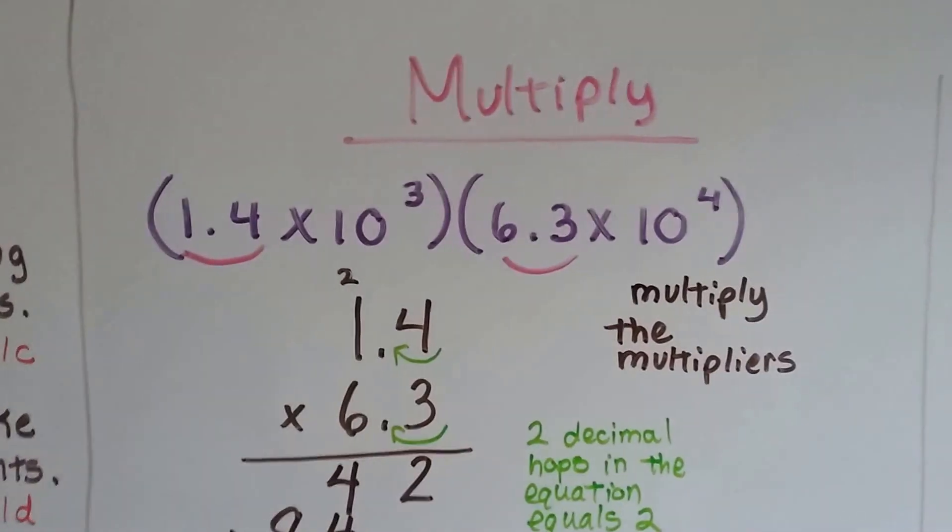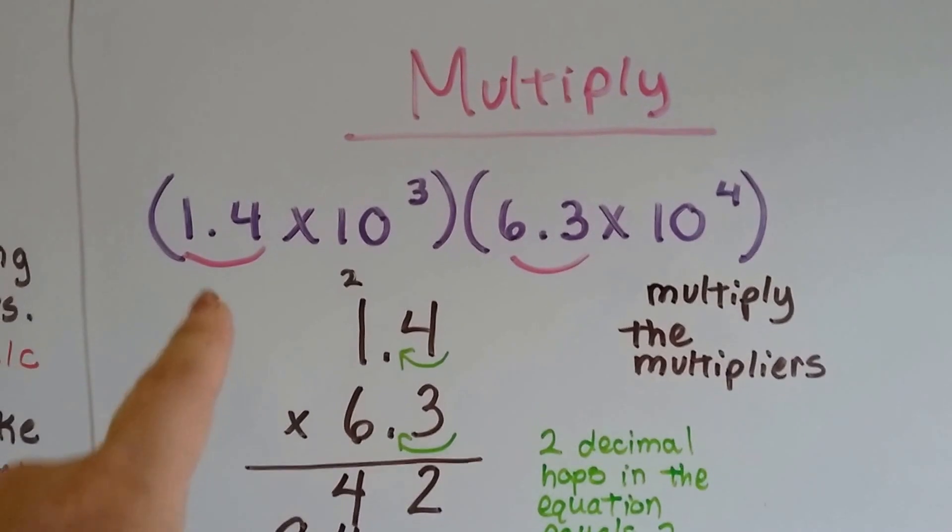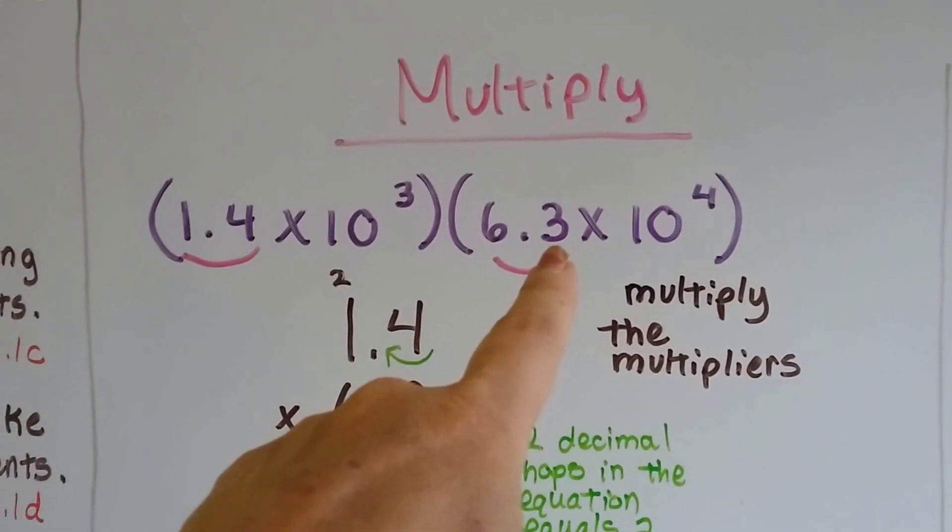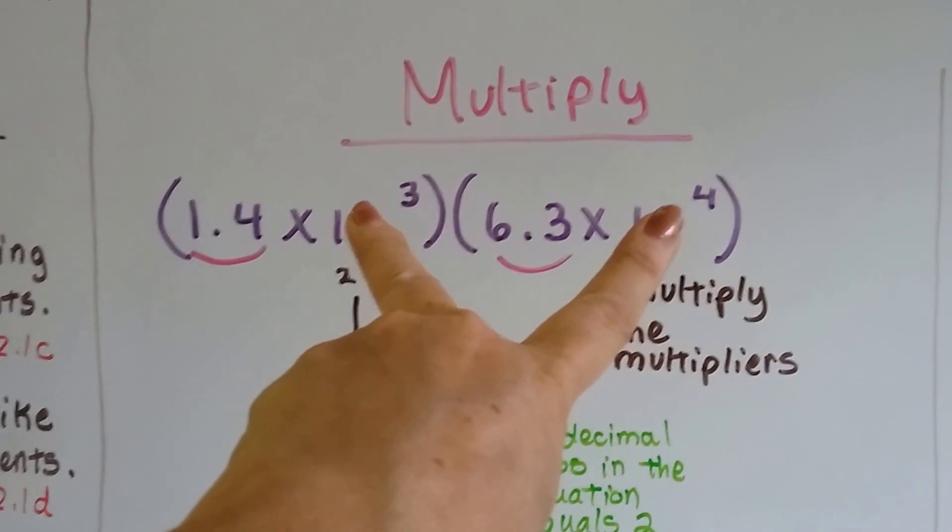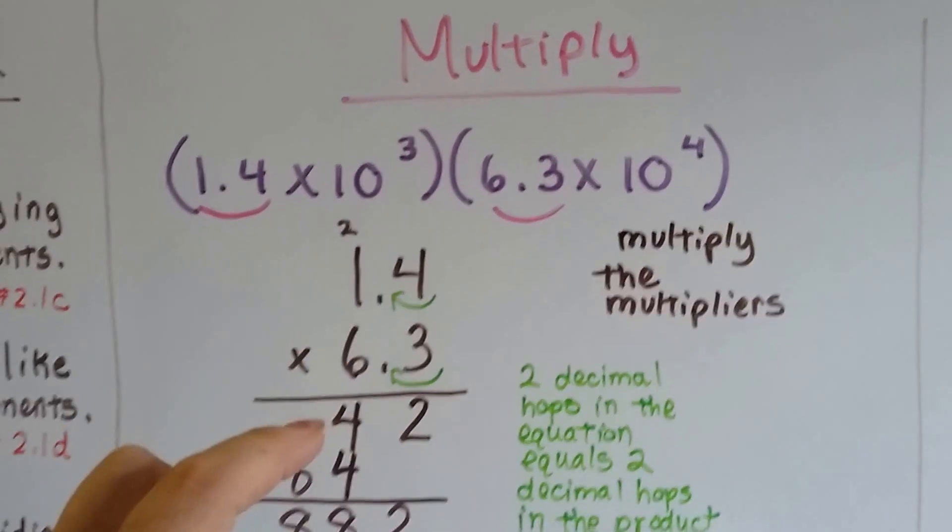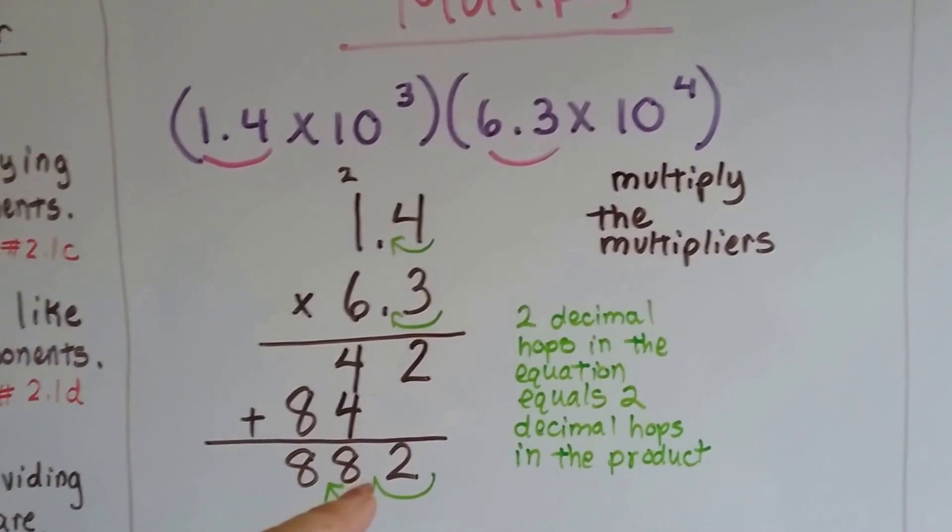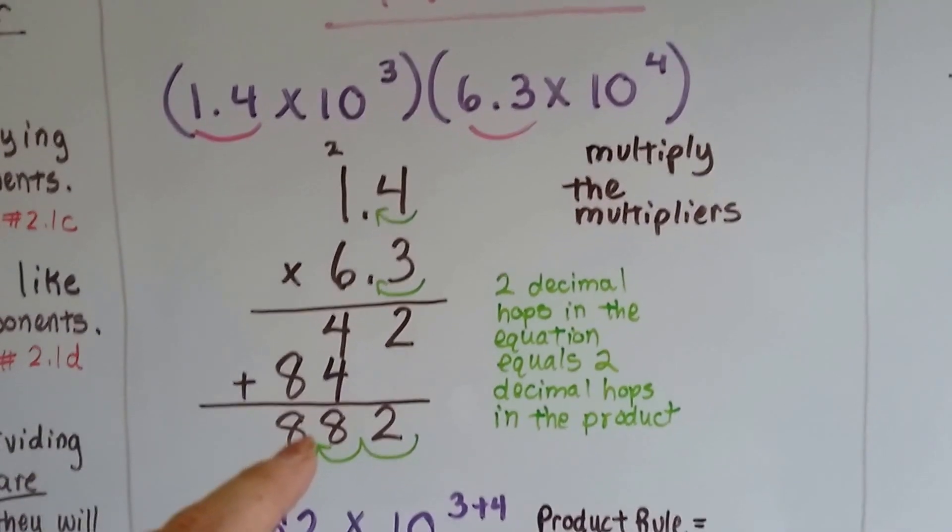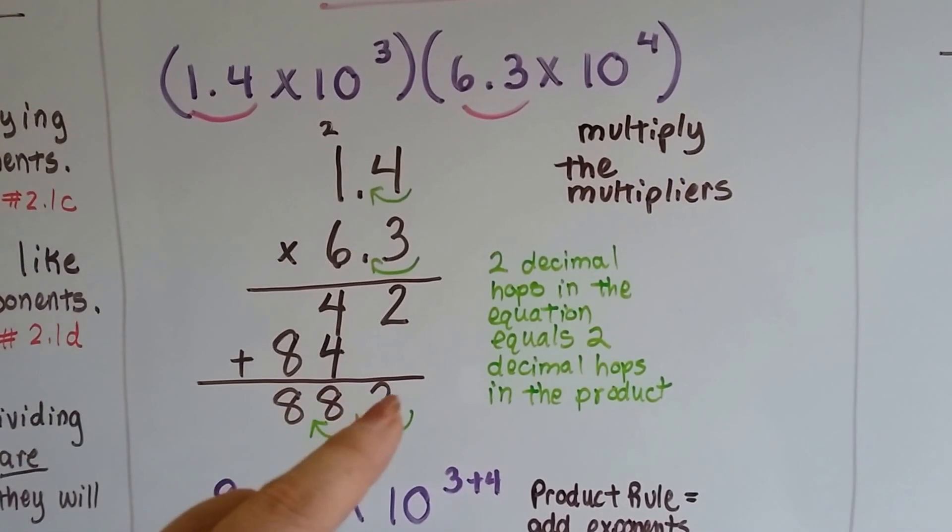When we multiply, we multiply the multipliers. Those would be this right here, 1.4, and the 6.3. And we leave the powers of 10 alone for right now. So, we multiply 1.4 times 6.3, and we get 8.82. And, because there's two decimal hops in the equation, there's two decimal hops in the product. So, we've got 8.82.